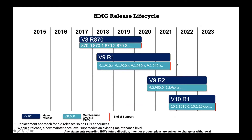From an HMC release lifecycle standpoint, we typically support each HMC release for two years. Some releases run longer because the next release isn't done or it's the last in a specific version. Within each release — such as V9R1, V9R2, or V10R1 — service packs supersede each other. For example, once V9R2M951 is released, all fixes, both security and functional, are delivered on top of that update. You always need to be on the latest service pack within a release to receive all fixes.